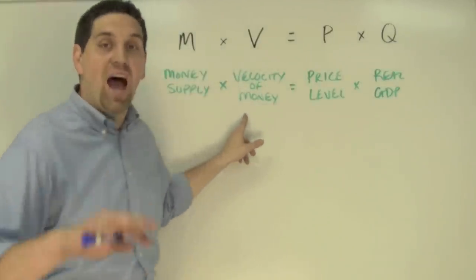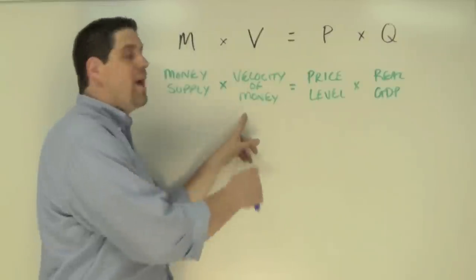V is the velocity of money, which is the average number of times money is spent and re-spent in the economy.